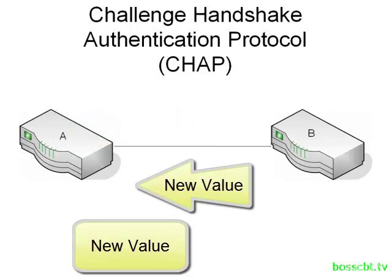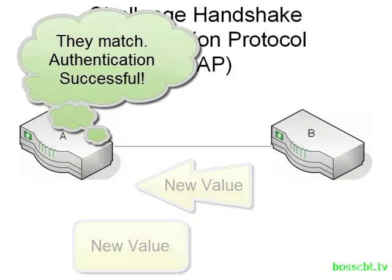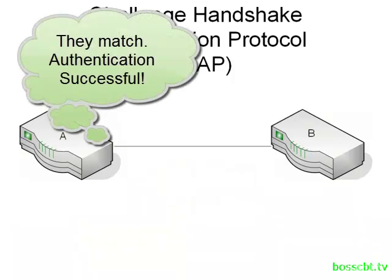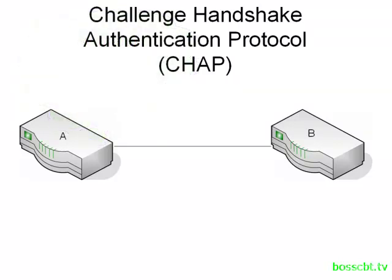If those two values match, then they are authenticated. Both routers can do this to each other. This way, no private information is ever sent across the link — that password never sees the light of day. This is a much more secure method for allowing the two routers to authenticate each other, and if you're going to choose a method for authentication, this is the one to use.